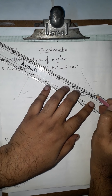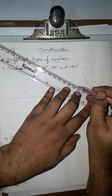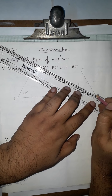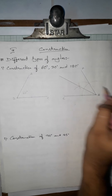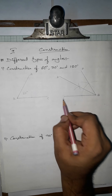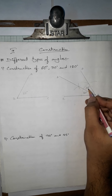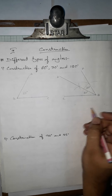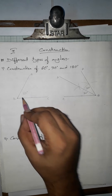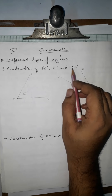Joining this new point to vertex B and extending gives us the bisector. The angle is now split: angle DBC = 30 degrees and angle ABD = 30 degrees, together making 60 degrees. So we draw 30 degrees by bisecting the 60-degree angle.